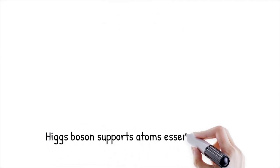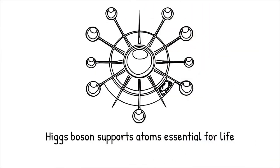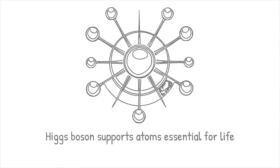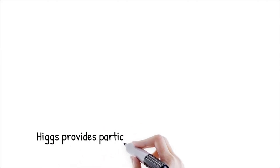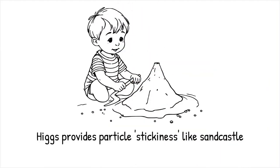If electrons had no mass, they wouldn't form stable orbits around nuclei. Without stable atoms, there'd be no stable chemistry, no water, no proteins, no life as we know it. The Higgs boson indirectly supports the existence of every atom in your body. Think of trying to build a sand castle on a beach — without stickiness in the sand, like mass that allows particles to come together, the sand would never stay put. The Higgs provides the stickiness that lets particles bond, forming the grand castle of our cosmic architecture.